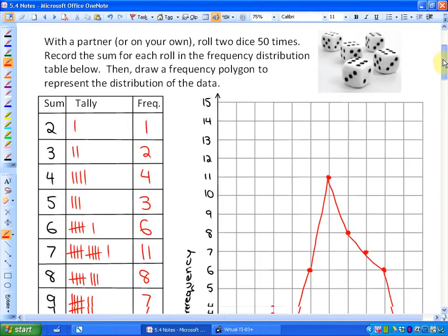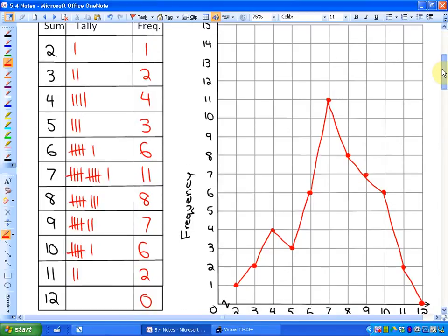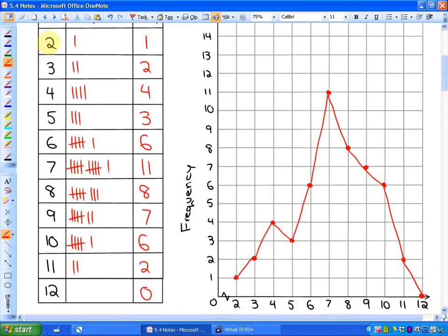And as I did that, here's what happened. So I rolled the sum of two, which is a one plus a one, only one time. I rolled the sum of three, two times, sum of four, four times, sum of five, three times, sum of six, six times, et cetera.